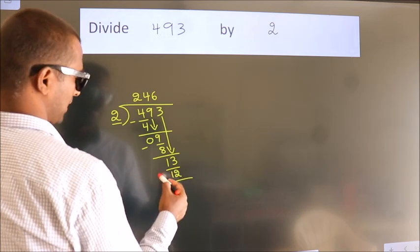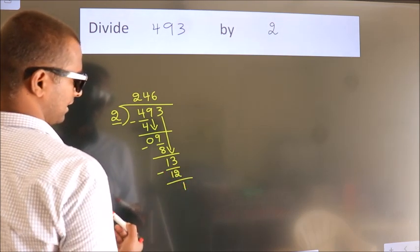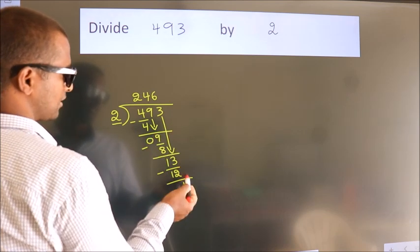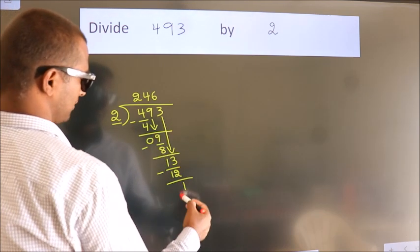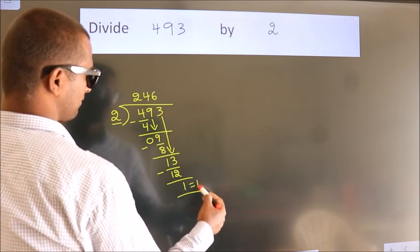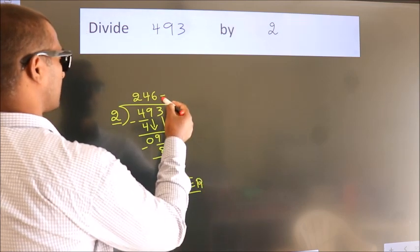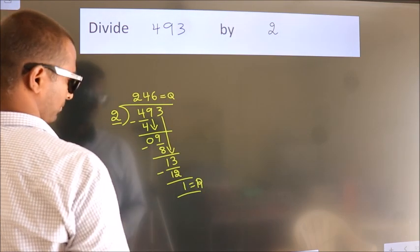Now we subtract. We get 1. No more numbers to bring it down, so we stop here. This is our remainder. This is our quotient. We try to figure it out. We just start to check.